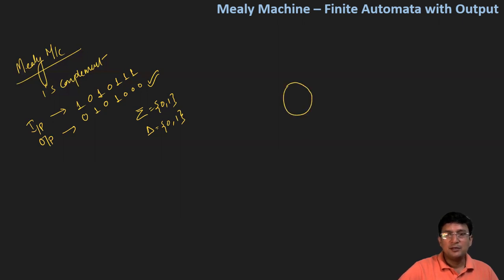So how do we design the Mealy machine for this? Let's say this is the start state, the q0 state. In the q0 state, if I get a zero, I should convert that to one and remain in the same state. And if I get a one, I should convert it to zero and remain in the same state.